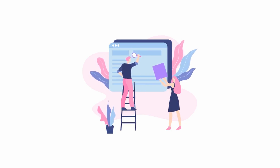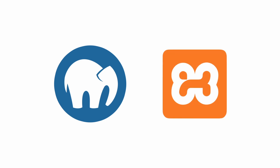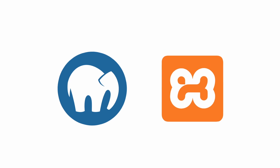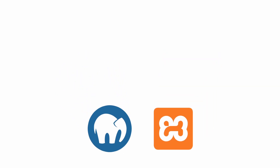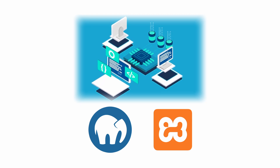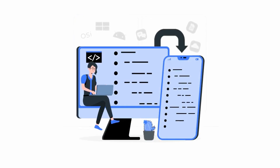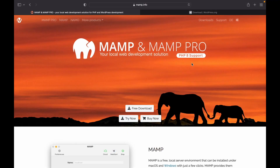This is where web development software such as MAMP or XAMPP comes into play. These softwares are free local server environments that are available for both macOS and Windows, and provide all the tools necessary to run WordPress and test your projects, even on a mobile device.